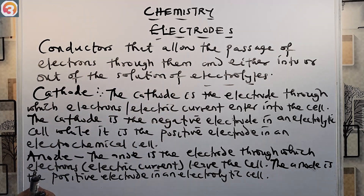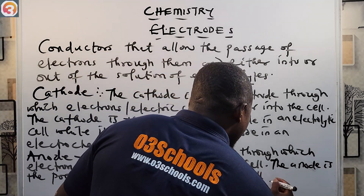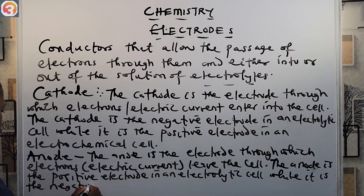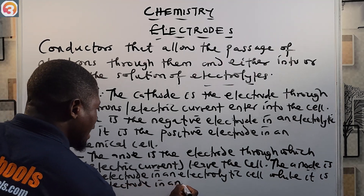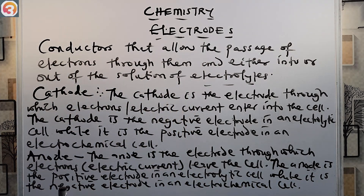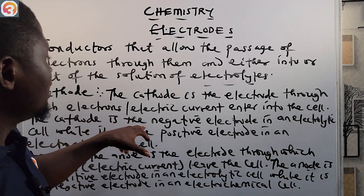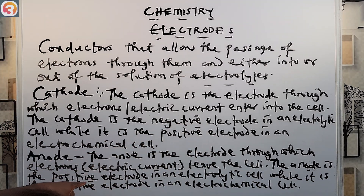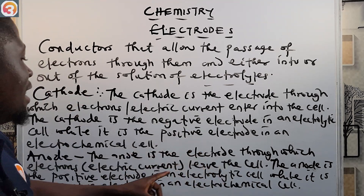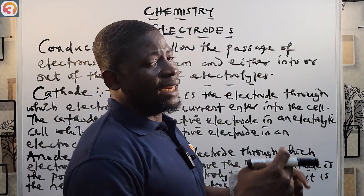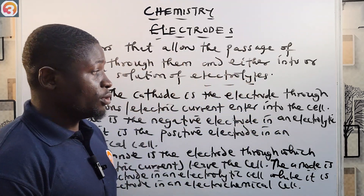The anode is the positive electrode in an electrolytic cell, while it is the negative electrode in an electrochemical cell. So note the difference: the cathode is the negative electrode in an electrolytic cell and the positive in the electrochemical cell; for the anode, it is the positive electrode in an electrolytic cell and the negative in an electrochemical cell.